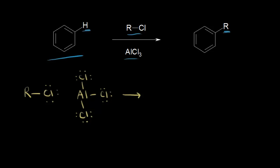Let's look at the mechanism for Friedel-Crafts alkylation. We start with our alkyl chloride and add aluminum chloride, which can function as a Lewis acid because it can accept a pair of electrons. Our Lewis base here is the alkyl chloride, which is going to donate an electron pair to that aluminum.